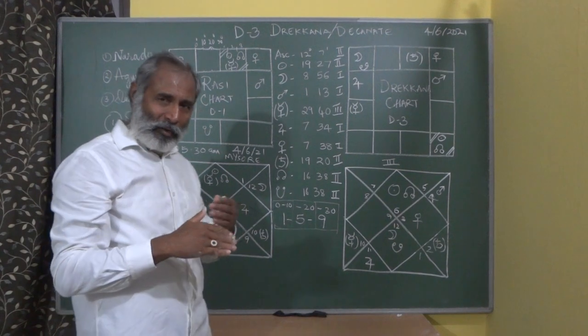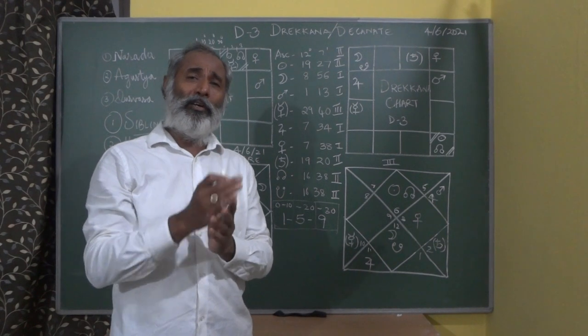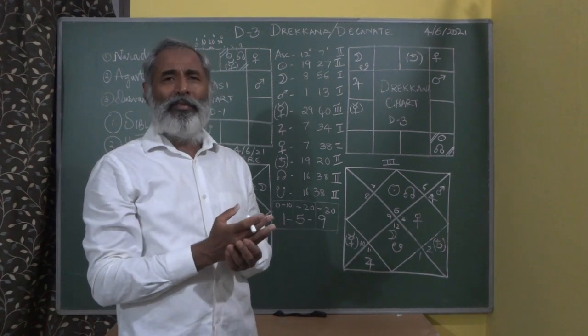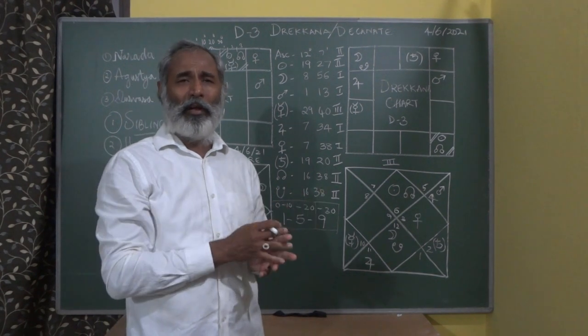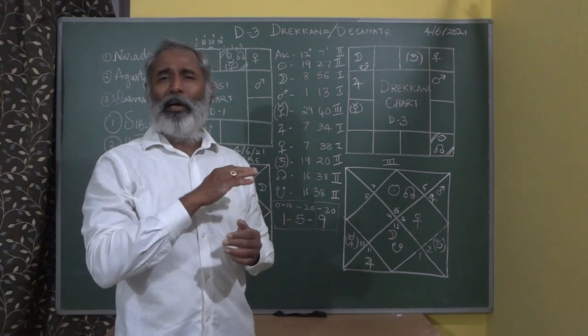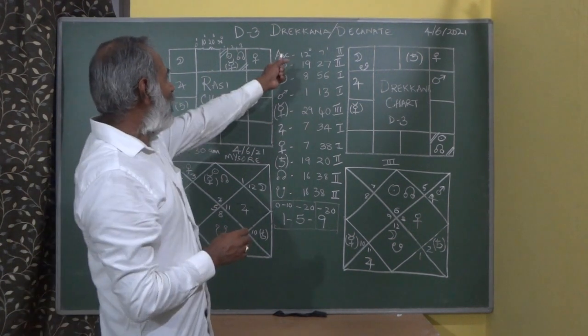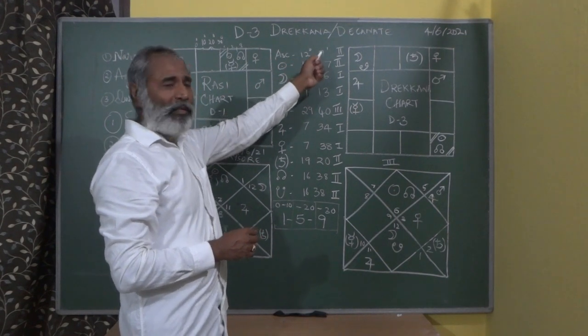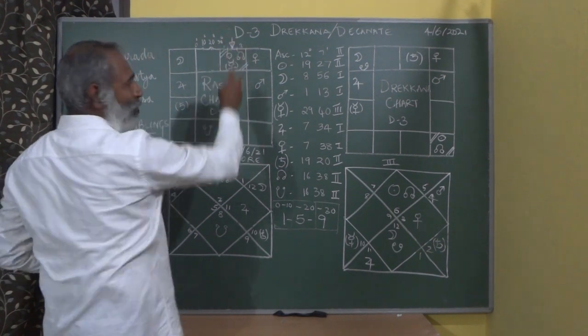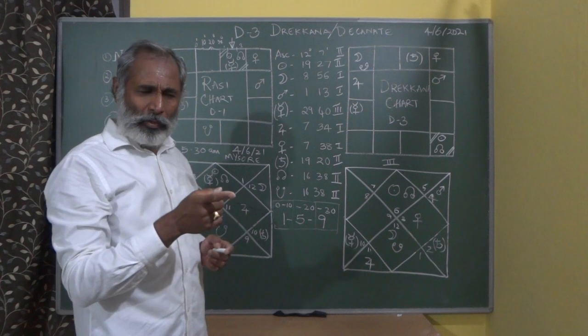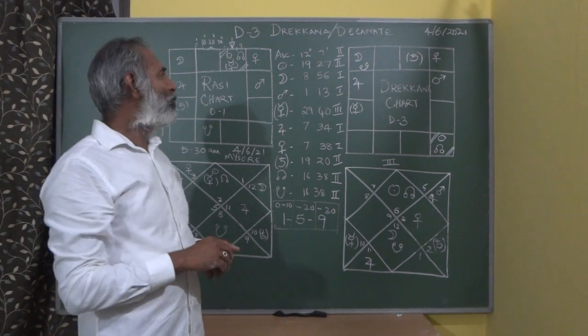I will come to the body parts in the next class in detail so you'll know how to plot it. There's a bit of confusion about whether the body parts move along with the ascendant or get stuck with the Kalapurusha chart at 0 degrees Aries. Let me solve all that. Here the first Drakana, second Drakana, and third Drakana - from there the body parts start moving. There's another conflict in higher level about whether the first Drakana starts with the Drakana of the ascendant itself.